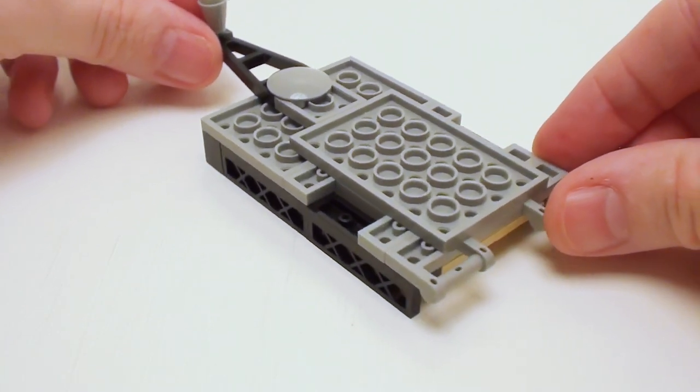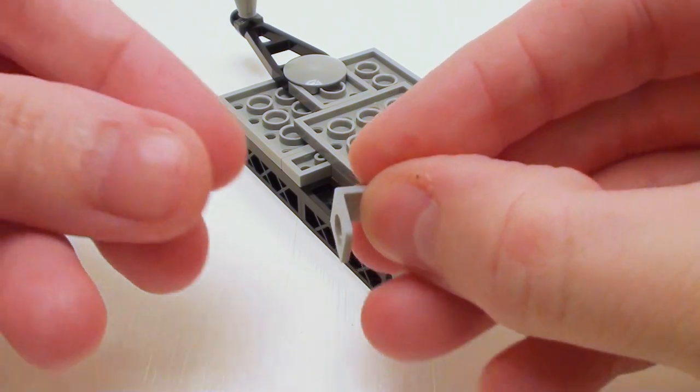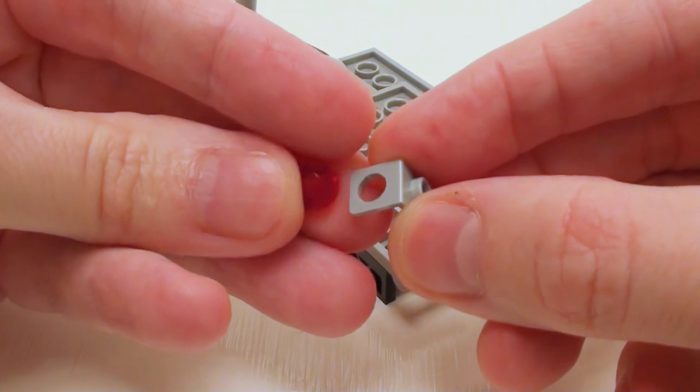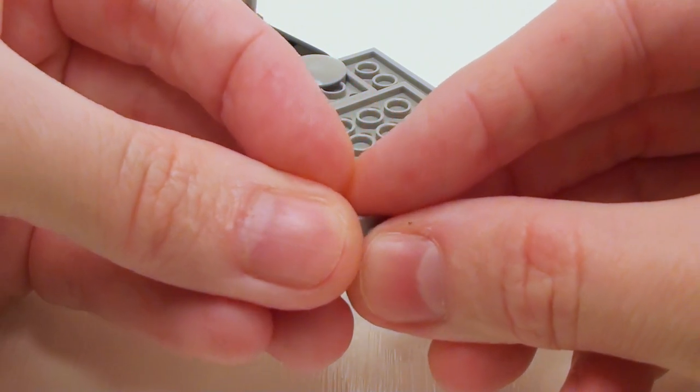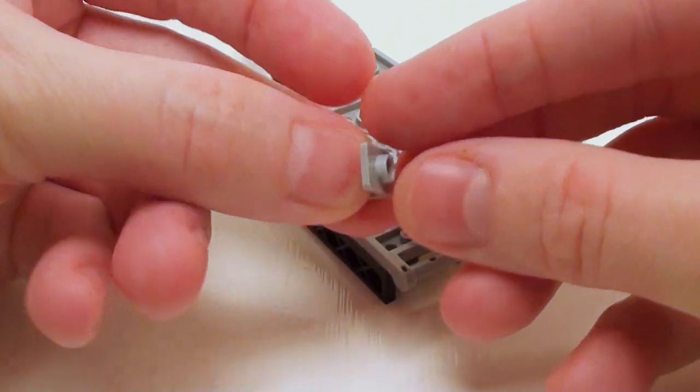Now for brake lights, I'm going to take one of these minifigure accessory clips and a transparent round plate or stud. Place it inside as shown where the stud does fit inside the slot.